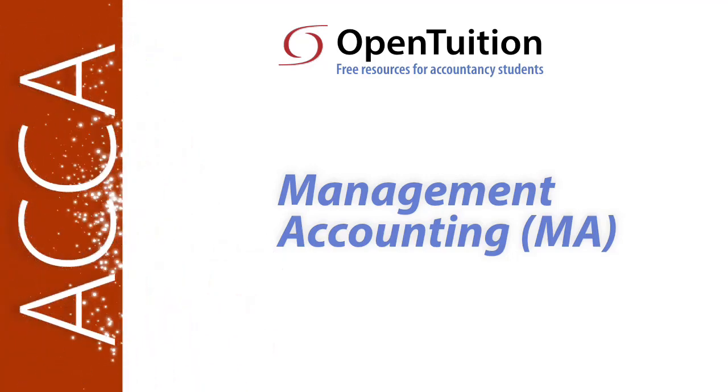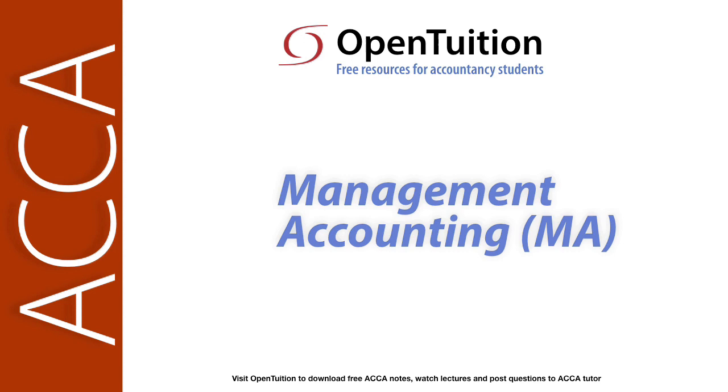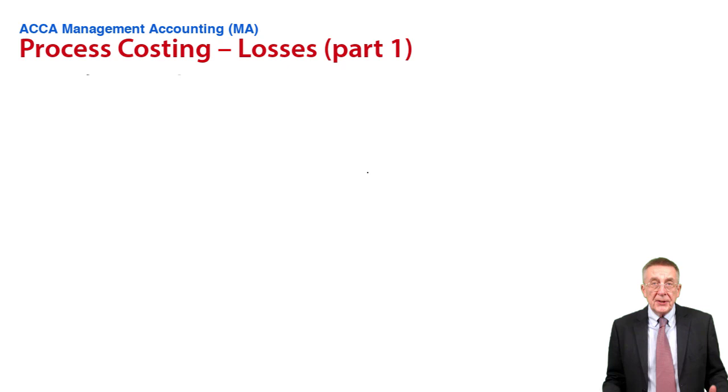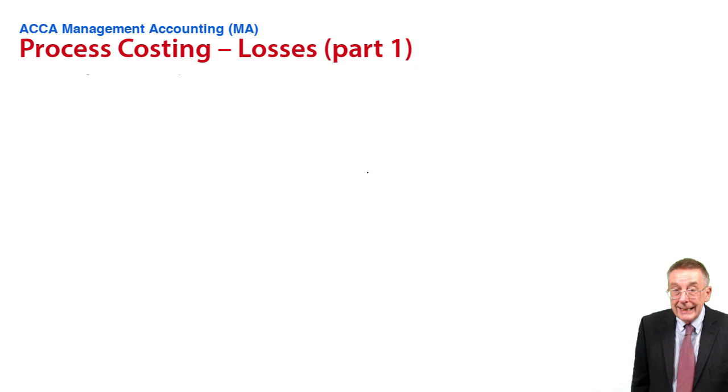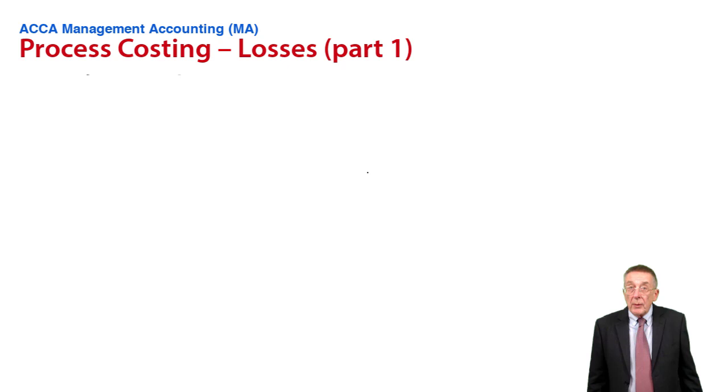This is a lecture from OpenTuition. To benefit from the lecture you should download the free lecture notes from OpenTuition.com. This is a lecture on chapter 12 of the free lecture notes and we're still on process costing. In the previous lecture I introduced it, showed you what the basic idea was, but I said there were three problem areas and the first area you could be tested on is losses. Let me explain with a series of little examples what we're talking about and how we deal with it.